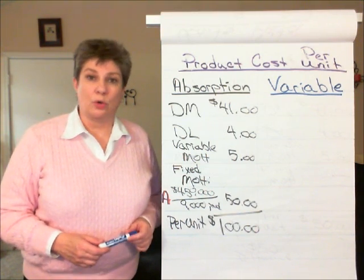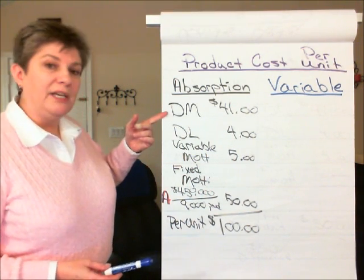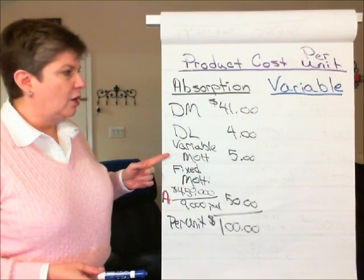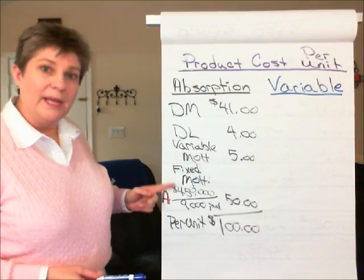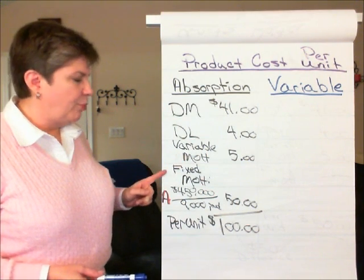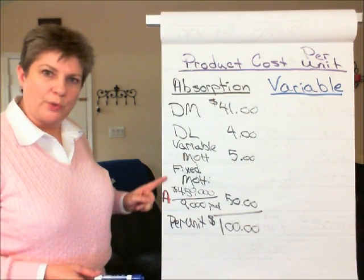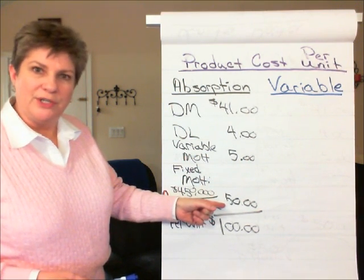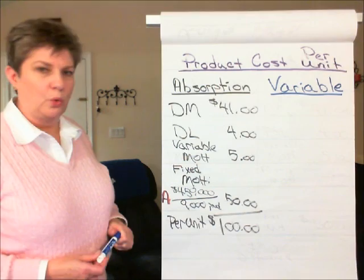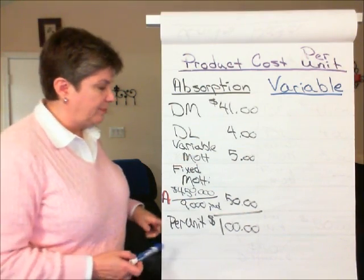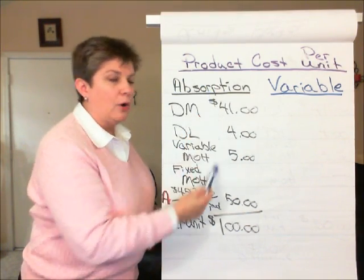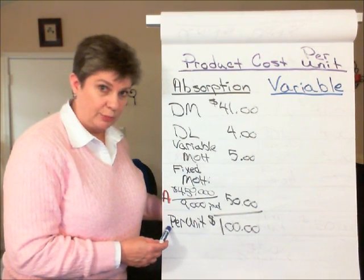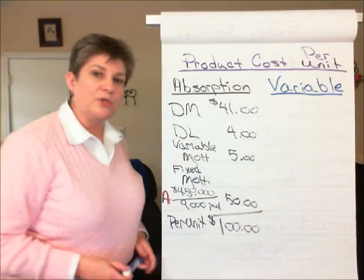Under absorption costing, the variable cost of materials, labor, and variable manufacturing overhead are assigned to inventory. In addition, a portion of fixed manufacturing overhead based on the number of units produced is also charged to each unit of inventory produced during the period. So in our scenario A, under absorption costing, our full or absorption costing product cost per unit was $100.